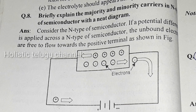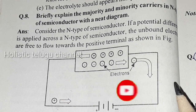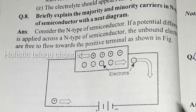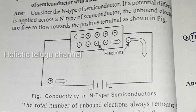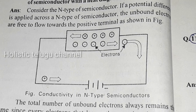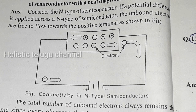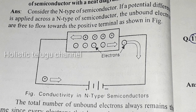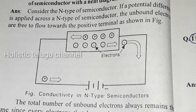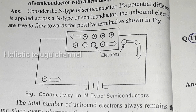The unbound electrons always remain in the same quantity since every electron that leaves the crystal to the positive terminal is replaced by an electron from the negative terminal. Therefore, the majority carriers are electrons and the minority carriers are holes.